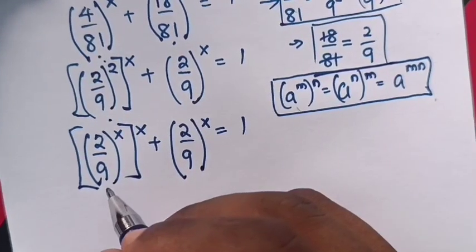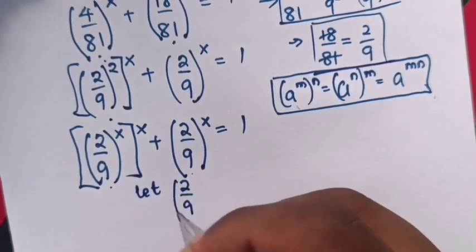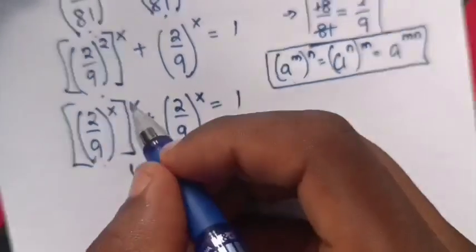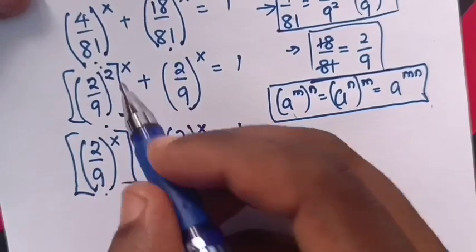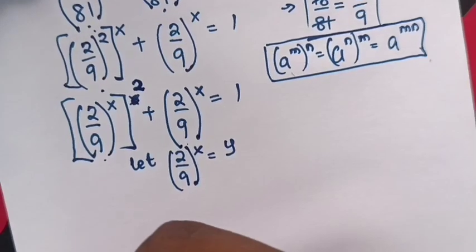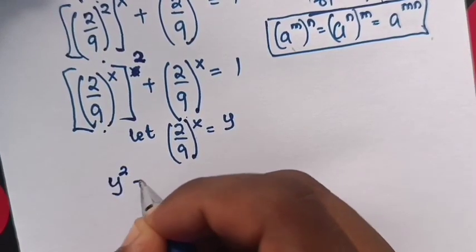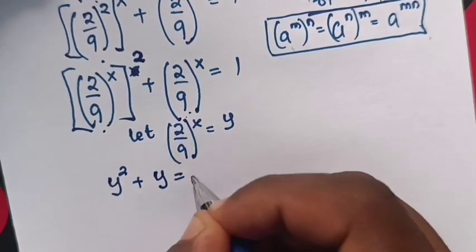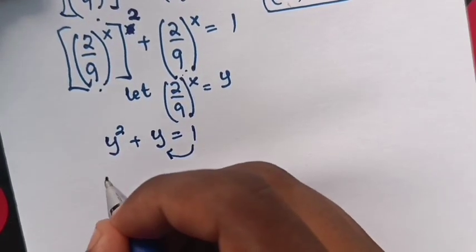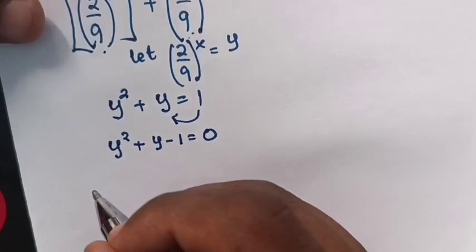Then (2 over 9) power x is common, so we let (2 over 9) power x equal to y. Our equation will be y squared plus y is equal to 1. Then we take this 1 to the left side, so it will be y squared plus y minus 1 is equal to 0.